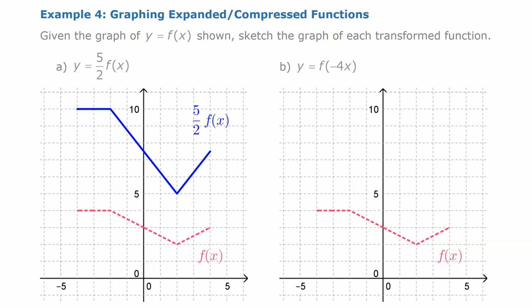One thing that might be surprising: if the function isn't touching the axis there are no invariant points, so the expansion also moves the graph away from the axis. For instance, if the function was 2 units away from the axis, after expansion by 2.5 it's now 5 units away — everything about it changes.